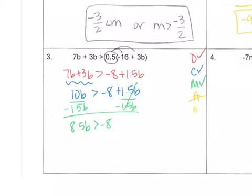I don't have anything to add or subtract, so my last step is to divide both sides by 8.5. And b is greater than negative 16/17ths. You might have also gotten a decimal of 0.94.